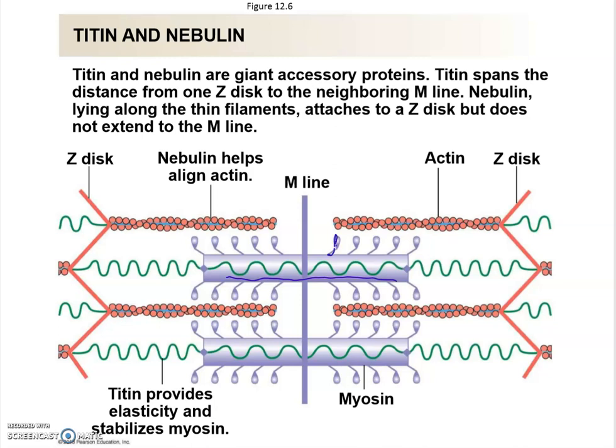The myosin heads sticking up are ready to interact with actin, but they will only be allowed to interact if the binding sites for myosin on actin are open. To open those binding sites, you have to move the tropomyosin away, and the only way tropomyosin will move is if calcium binds to troponin — that changes troponin's shape and moves tropomyosin away from the binding sites.